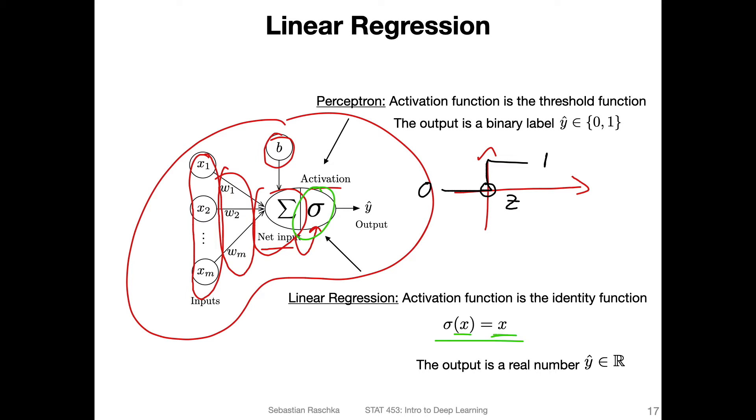In linear regression, the same concept applies as in the perceptron. We compute the net input by multiplying the weights with the features and then adding the bias unit. This is how the prediction in linear regression is created.